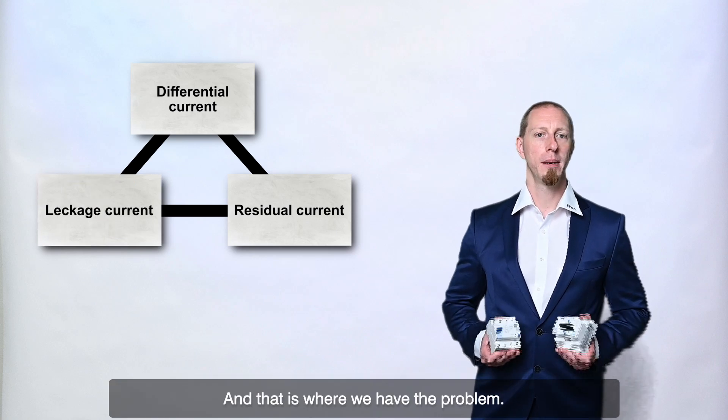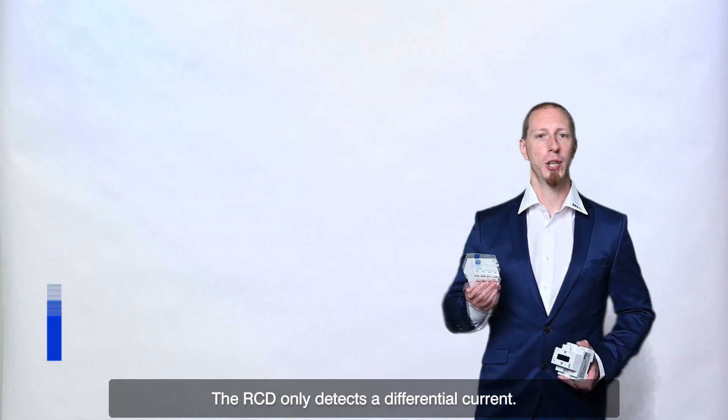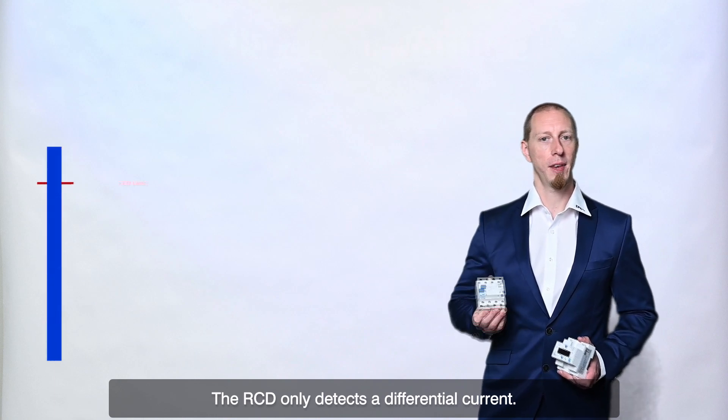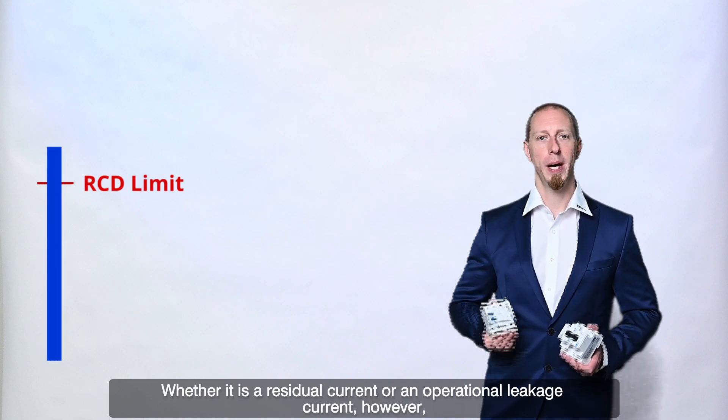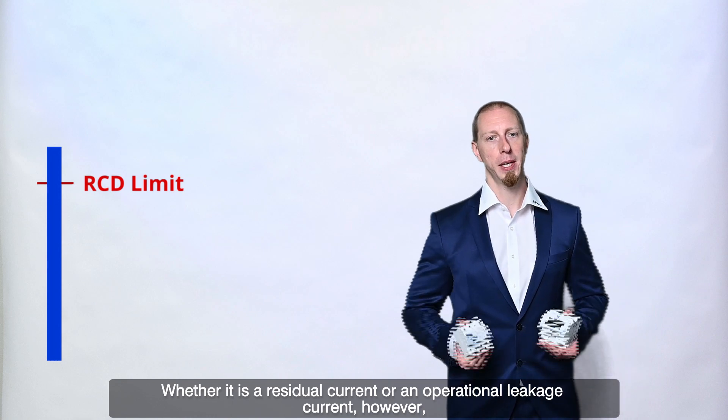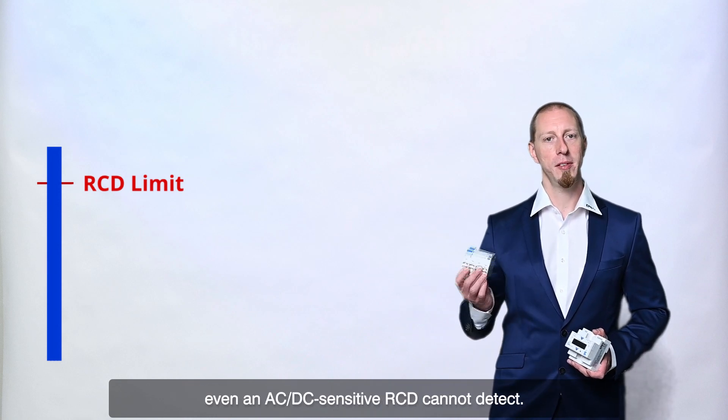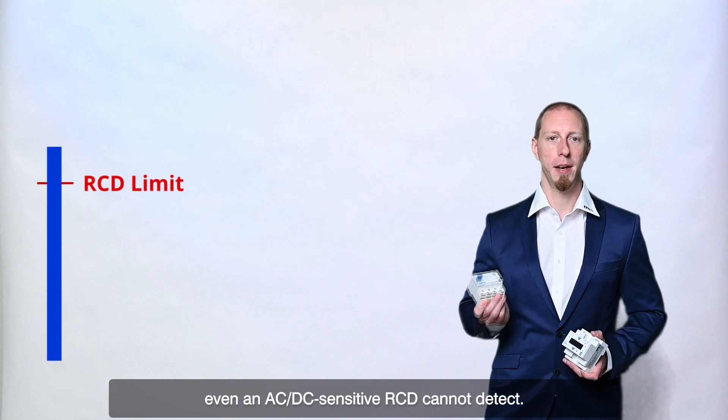And this is where we have the problem. The RCD only detects a differential current. Whether it is a residual current or an operational leakage current, however, even an AC-DC sensitive RCD cannot detect.